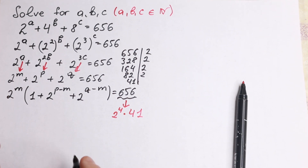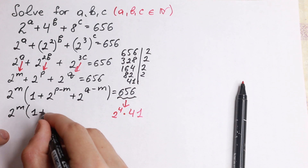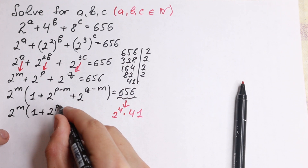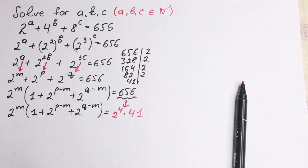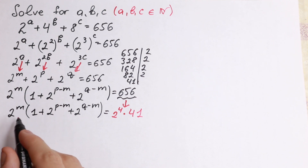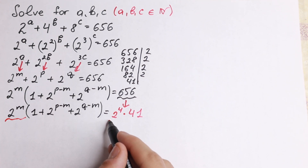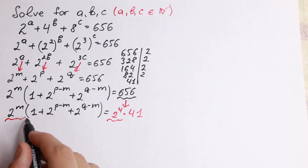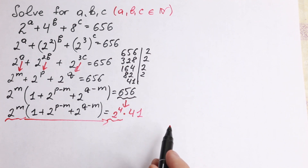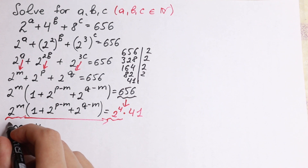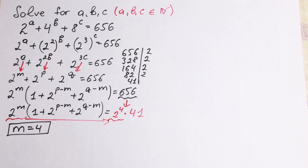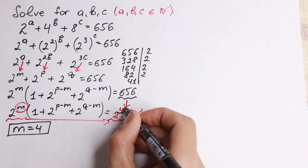Let's write our left side: 2 to the m times the quantity 1 plus 2 to the power p minus m, plus 2 to the power q minus m, equals 2 to the fourth times 41. Comparing factors, 2 to the m corresponds to 2 to the fourth, so m equals 4. And the parentheses equals 41.